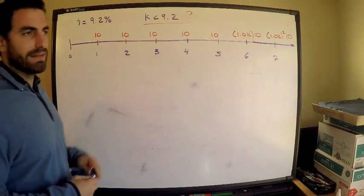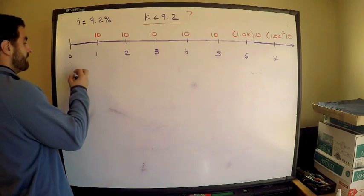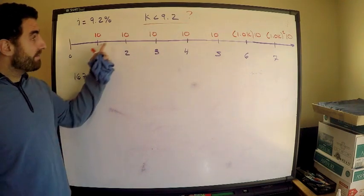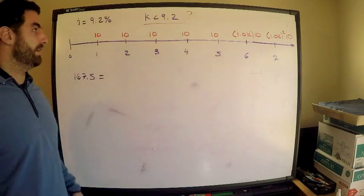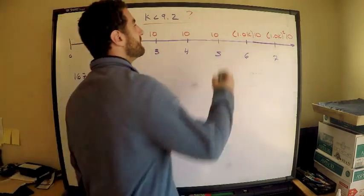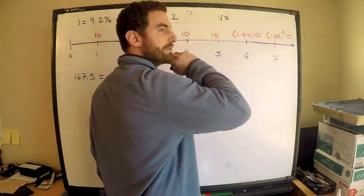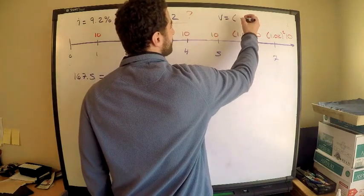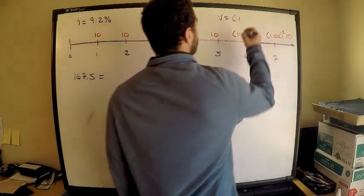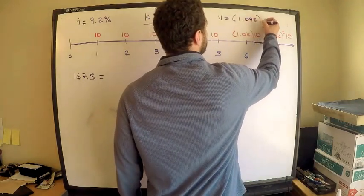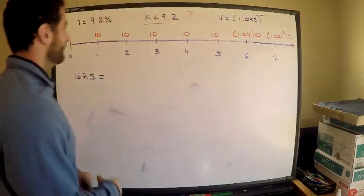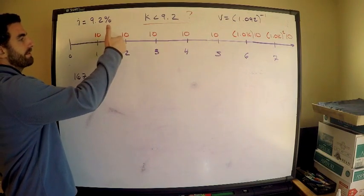The present value is 167.5. I need to find the present value of all these payments. Let's first deal with up to year 5. Let me write down the notation. V is always equal to 1 plus the interest rate to the negative 1. The interest rate is 0.092, so 1.092 to the negative 1. This is what V represents, the discount factor. This is what allows you to do present value.